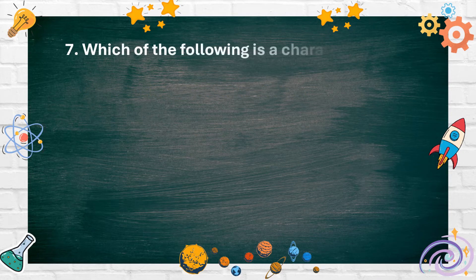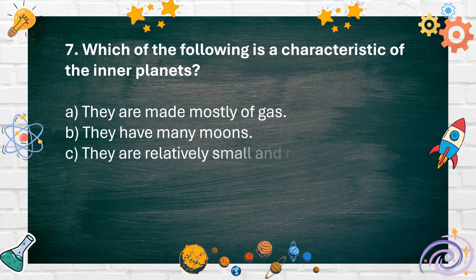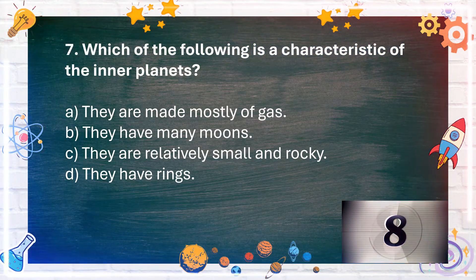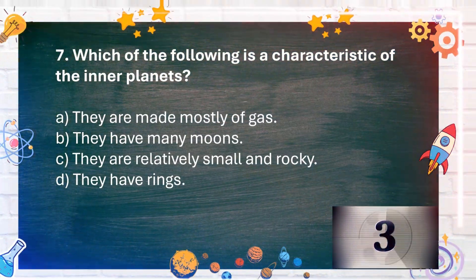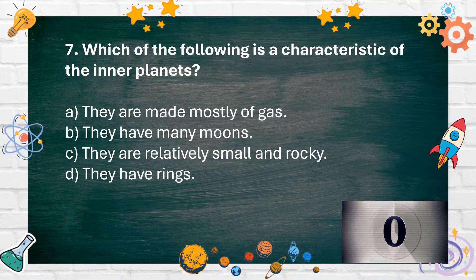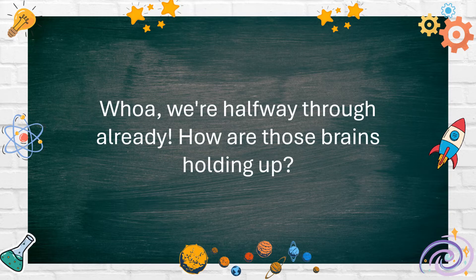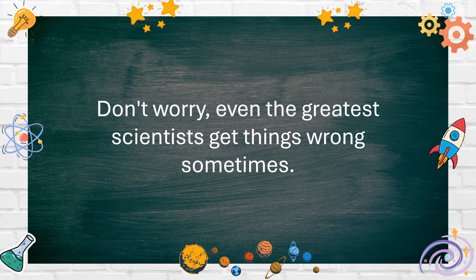Number 7. Which of the following is a characteristic of the inner planets? A. They are made mostly of gas. B. They have many moons. C. They are relatively small and rocky. D. They have rings. The answer is C. They are relatively small and rocky.